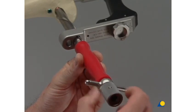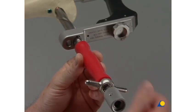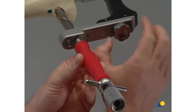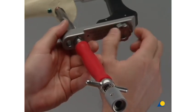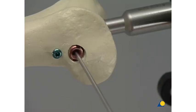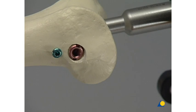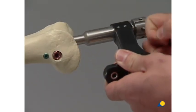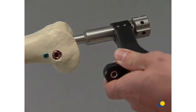The connecting screws for the spiral blade and the aiming arm are loosened and the inserter and the aiming arm are removed, as is the guide wire. Then the proximal locking follows, although it's not shown in this practical exercise. The connecting screw between the aiming arm and the nail is loosened and removed together with the insertion handle.